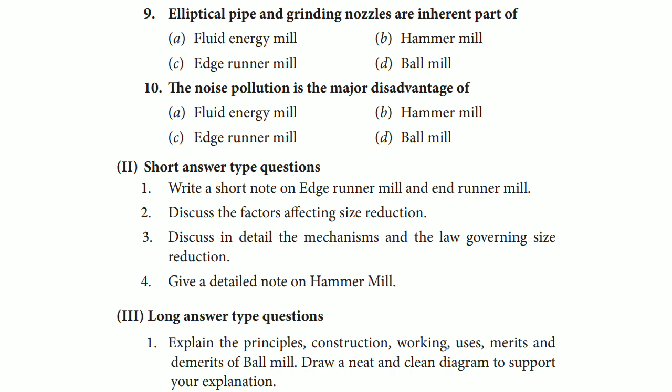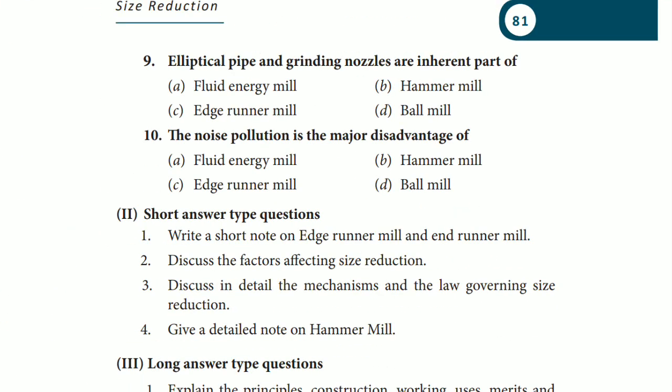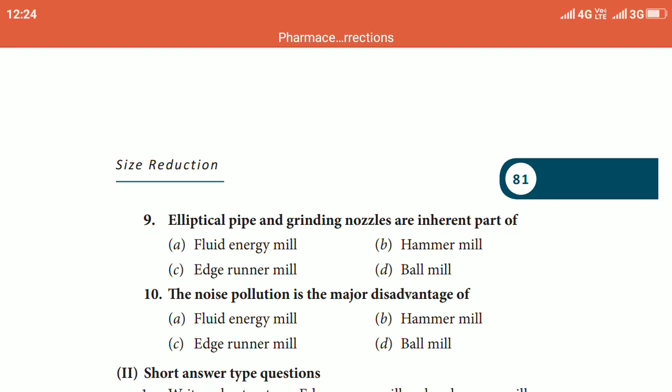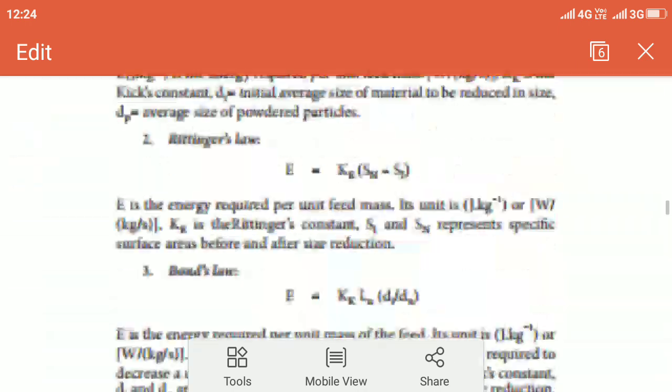Next question is question number 9: elliptical pipe and grinding nozzles are inherent part of fluid energy mill, hammer mill, edge runner mill, or ball mill. The correct answer is fluid energy mill, option A. I will show you the diagram also and the equations of different theories: Rittinger's, Kick's, Bond's. Next one is question number 10: the noise pollution is a major disadvantage of, correct answer is ball mill. You might have used the ball mill in your lab and you might have witnessed the pollution in terms of noise that ball mill causes. Otherwise hammer mill, fluid energy and edge runner mill are not that much noisy as your ball mill.